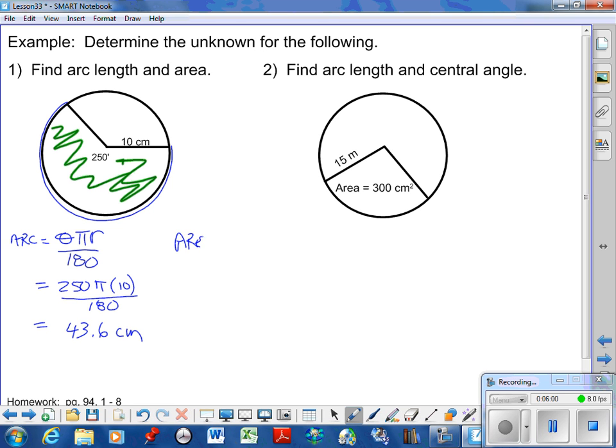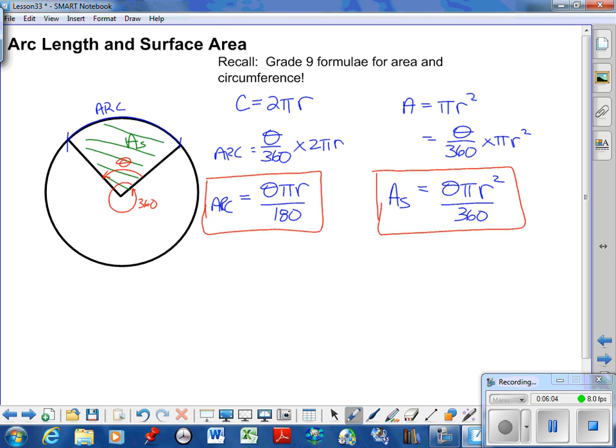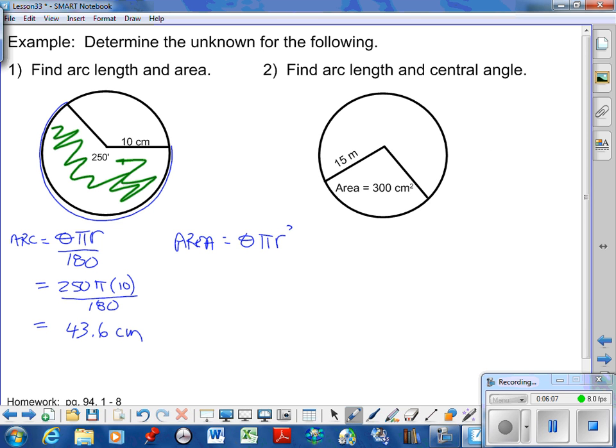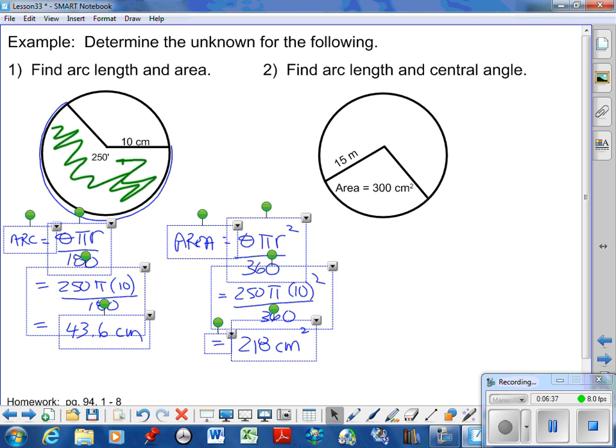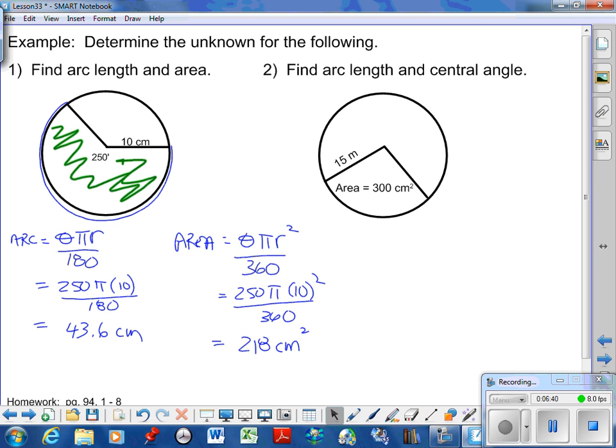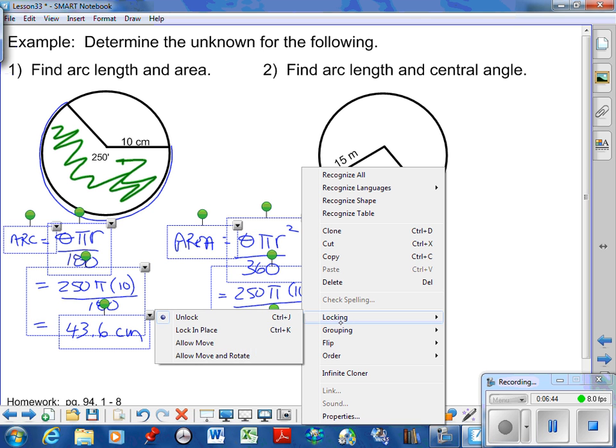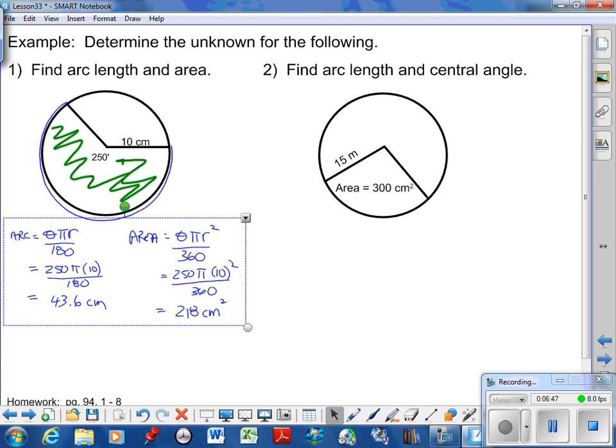Now area. You have that formula already: θπr² over 360. Once you have the formula, it's just a substitution or plug-and-chug scenario. 250 times 3.14 times 100, divide by 360, and we end up with 218 centimeters squared. It doesn't look nearly as bad when you get the formulas. We're back to just playing around with formulas, identifying your formula and going from there.